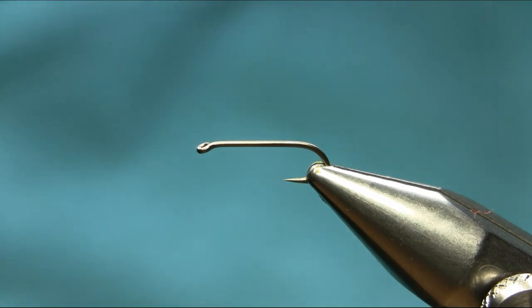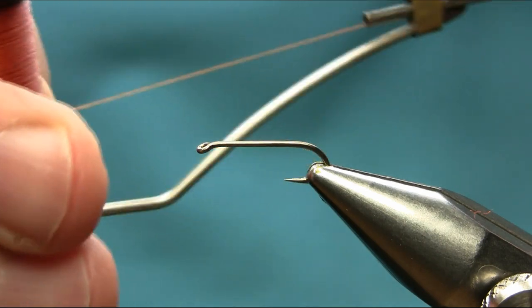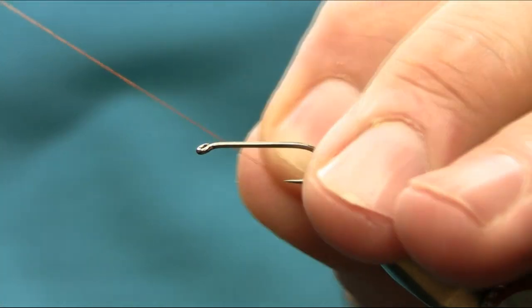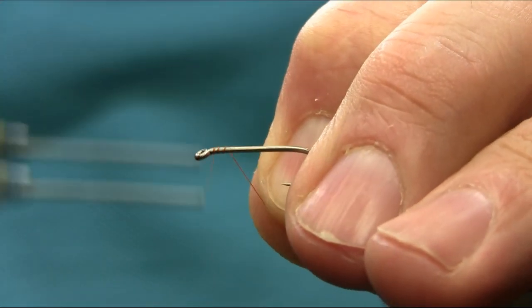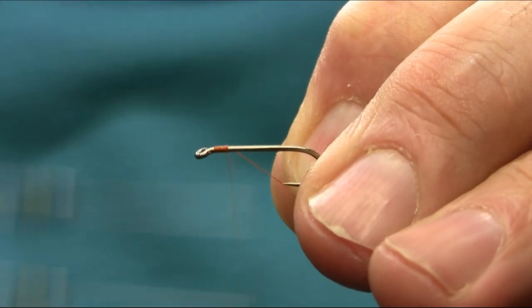Hello friends, this is size 12 long shank hook and thread I'm using rusty brown 8/0. I'll explain all the materials. Just start below the eye using touch and turn.